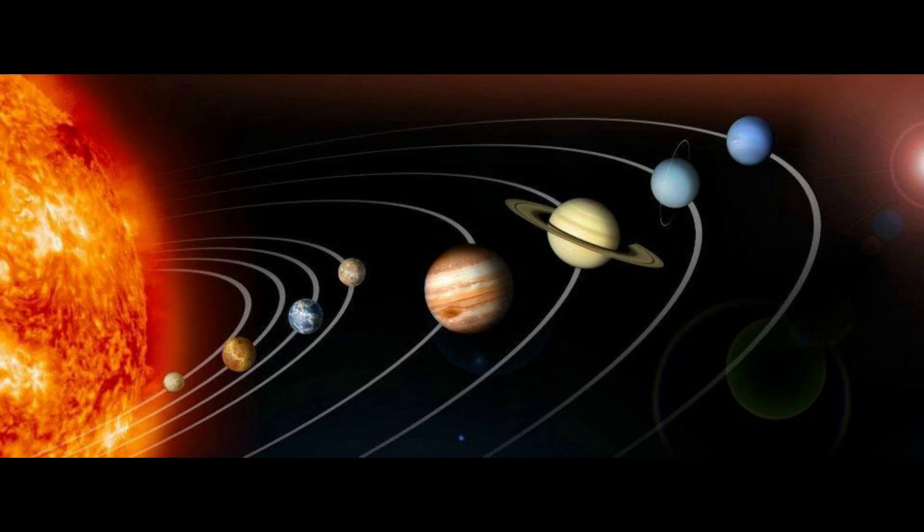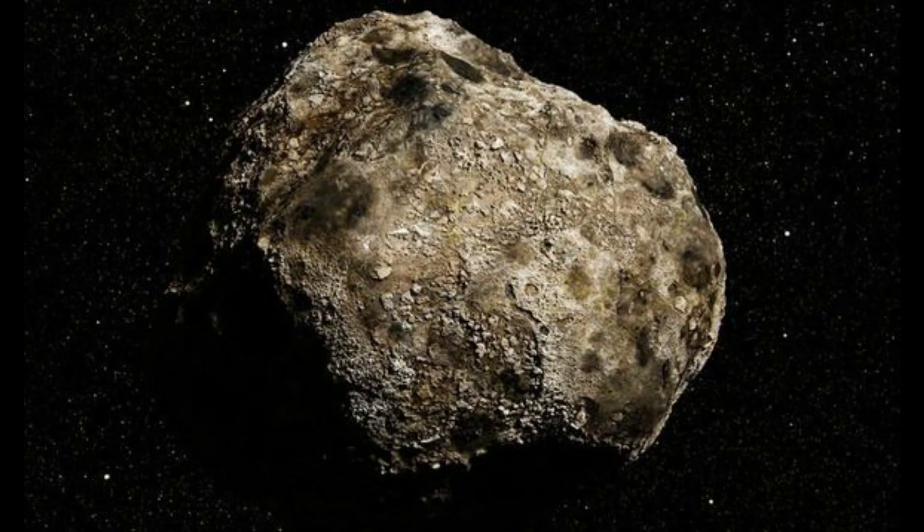Starting from Mercury, Venus, Earth, Mars, Jupiter, Saturn, Uranus, Neptune. Pluto is a dwarf planet. Now we will talk about asteroids.